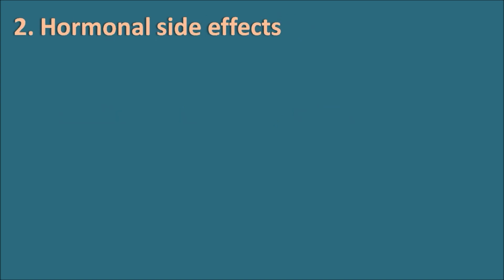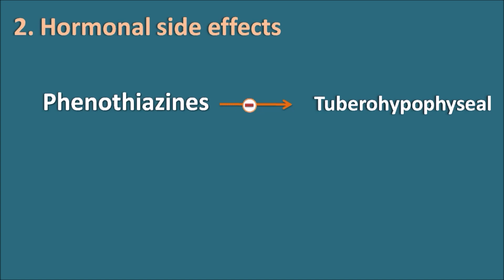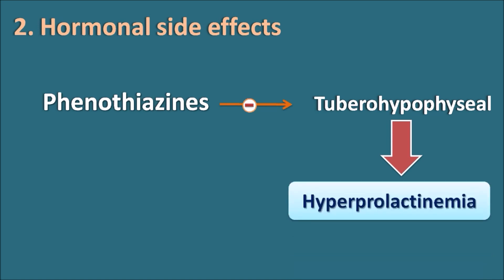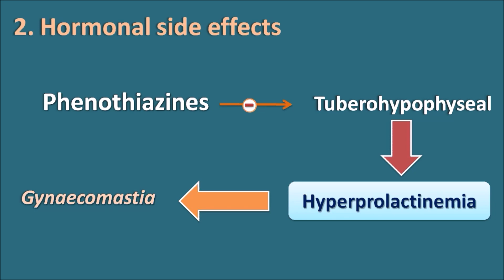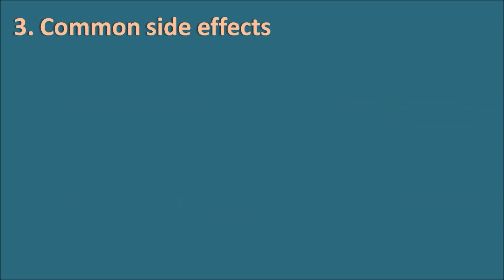The second type of side effects caused by phenothiazines are hormonal side effects. Phenothiazines act as antagonists on dopamine receptors on the tuberoinfundibular pathway. One of the hormones affected by this antagonism is prolactin, so phenothiazines can increase prolactin levels, resulting in hyperprolactinemia. This hyperprolactinemia may lead to gynecomastia — enlargement of the breast in both men and women.